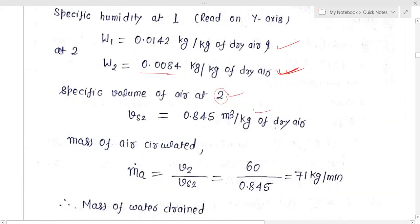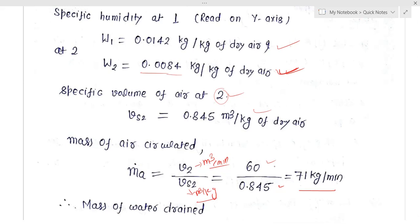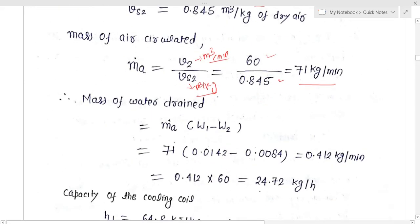The specific volume at point 1 is read from the psychrometric chart as 0.845 cubic meters per kg of air. To calculate the mass of air circulated, divide the volume flow rate by the specific volume: 60 divided by 0.845 gives 71 kg per minute — meaning you require 71 kg per minute of air to be circulated in the conditioned room.